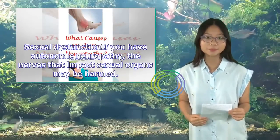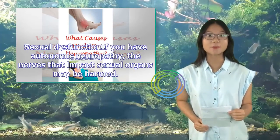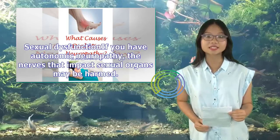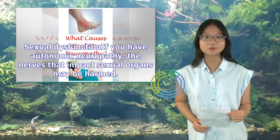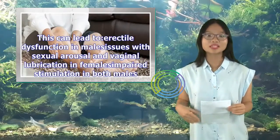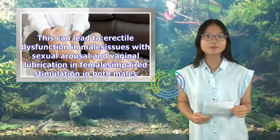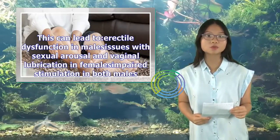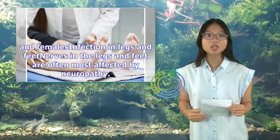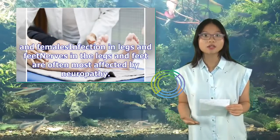Sexual dysfunction: if you have autonomic neuropathy, the nerves that impact sexual organs may be harmed. This can lead to erectile dysfunction in males, issues with sexual arousal and vaginal lubrication in females, and impaired stimulation in both males and females.